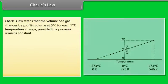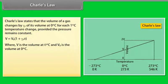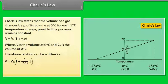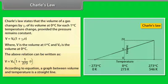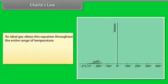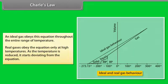Charles law states that the volume of a gas changes by gamma P of its volume at 0 degree centigrade for each 1 degree centigrade temperature change provided the pressure remains constant. V is equal to V not multiply by 1 plus gamma P theta, where V is the volume at theta degree Celsius and V not is the volume at 0 degree centigrade. According to equation, a graph between volume and temperature is a straight line. An ideal gas obeys this equation throughout the entire range of temperature. Real gases obey the equation only at high temperatures. As the temperature is reduced, it starts deviating from the equation.